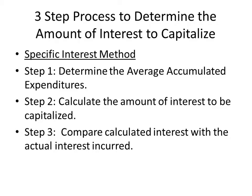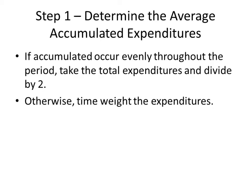Then you have to capitalize the amount of interest and compare that with the actual interest incurred. So step one: figure out how much you spent. If accumulated expenditures occur evenly throughout the period, then you take the total expenditures for the year and divide it by two — that's just the average for the year.